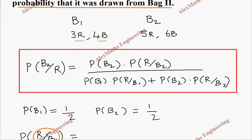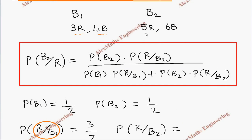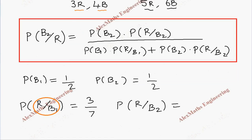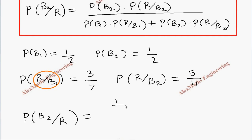So the probability of getting red from bag one is three by seven. Similarly, P(R | B2) — getting red from bag two — is five out of the total eleven, so five by eleven. Now let's substitute all these values.